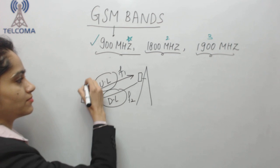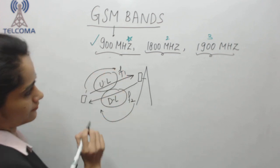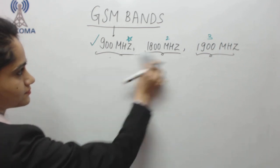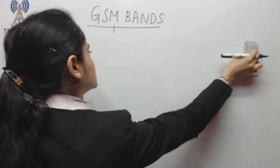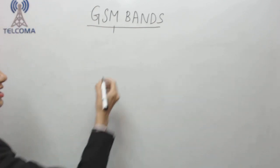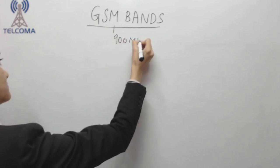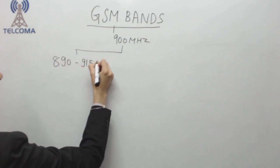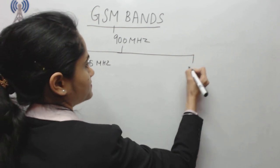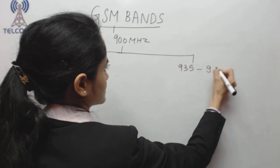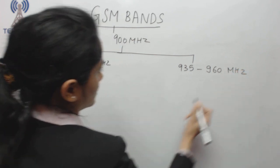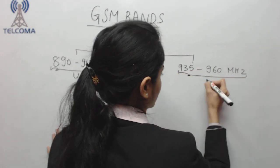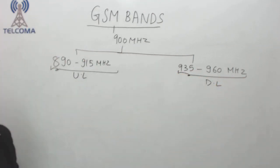All uplink signals will pass through one frequency range and downlink signals through another. For the 900 megahertz band, the uplink is 890 to 915 megahertz and the downlink is 935 to 960 megahertz.